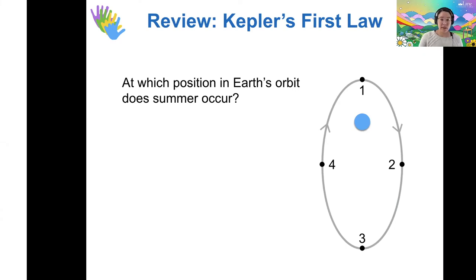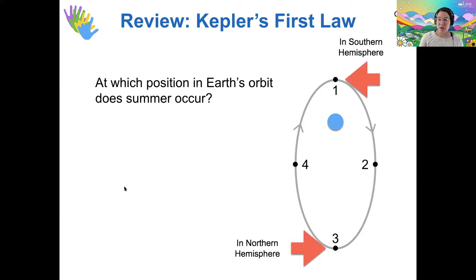All right. So I'm seeing the votes kind of split between one and three, which is no surprise. Each of these are a position where summer occurs, because northern hemisphere summer actually occurs at position 3, when Earth is at its farthest distance from the sun at aphelion. And southern summer happens at position number one, when Earth is actually closest to the sun at perihelion.